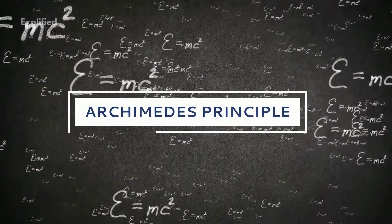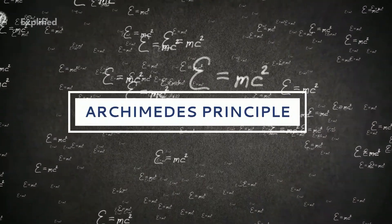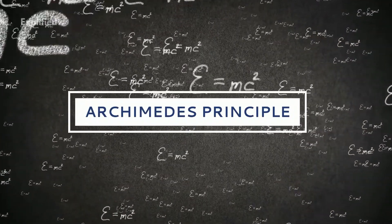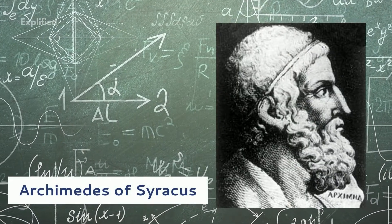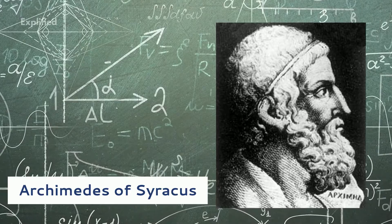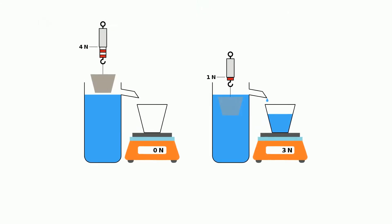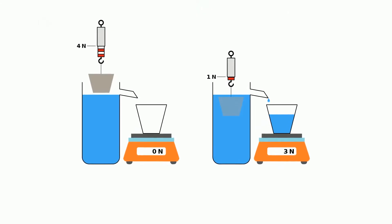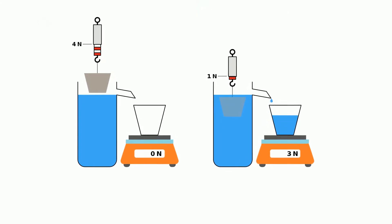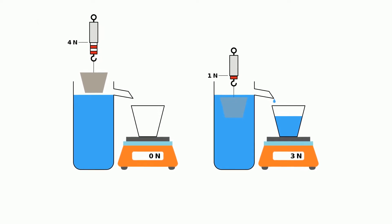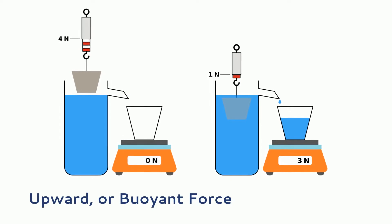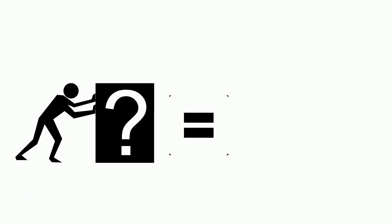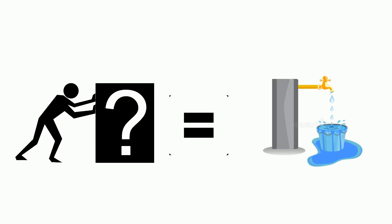The notorious Archimedes principle, popularly known as the physical law of buoyancy, was discovered by the ancient Greek mathematician Archimedes of Syracuse. The principle states that any object completely or partially submerged in a fluid, gas or liquid at rest is acted upon by an upward or buoyant force, and the magnitude of that force is equal to the weight of the fluid displaced by the body.